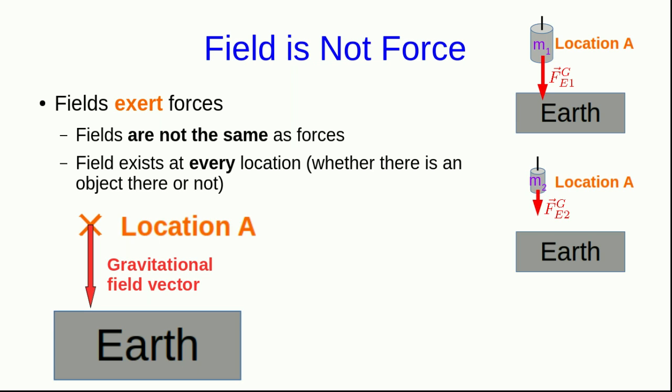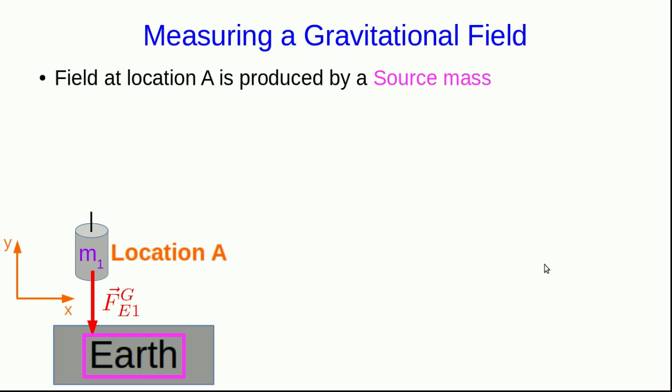The fact that the forces on M1 and M2 are different does not mean that the field is different depending on which mass we use to measure the field. The field has to be a property only of the Earth and of the location where we measure its field. So the value of a field in general, or an interaction field, depends only on the source of the interaction field, which in this case is the Earth, and the location where we're measuring it. It never depends on what we use to measure it.